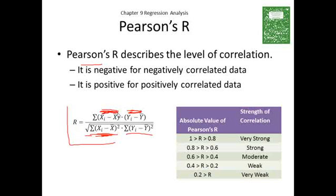If this differential is negative and this one is positive, that would imply that a low x leads to a high y and our r would be negative. So you're seeing here again, Pearson's r is negative if it's negatively correlated, and it's positive if it's positively correlated.